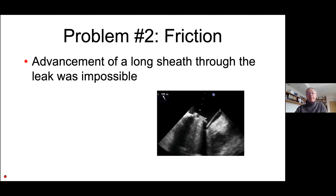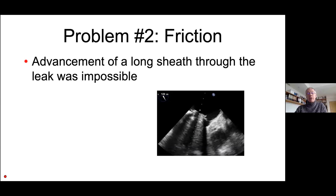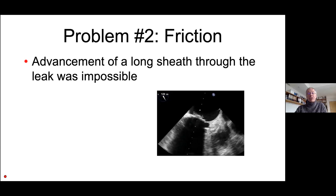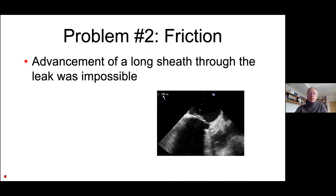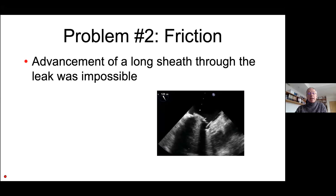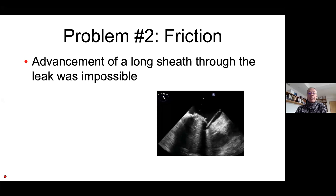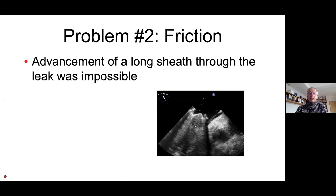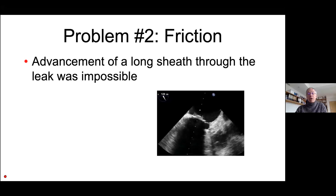This was problem number one, and it can be solved by changing the position of the wire — that was easy to solve. Then we had problem number two, and that was friction. That is something you very often encounter when you try to close paravalvular leaks, not only in the mitral position but also in the aortic position. Advancement of a long sheath through the leak was impossible due to friction from the calcium in the annulus and the structure of the valve.